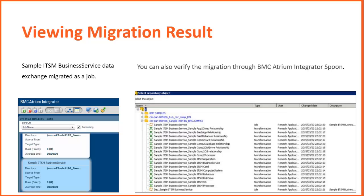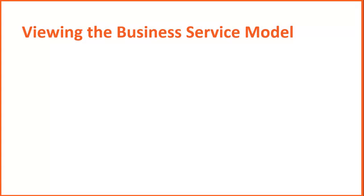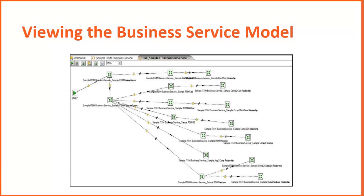You can also open the BMC Atrium Integrator Spoon and view the post-migration result — that is, the parent exchange converted into a main job with respective transformations. You can also view the business service model of the migrated job along with its relationship classes.